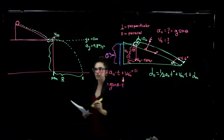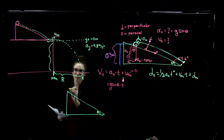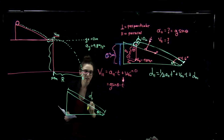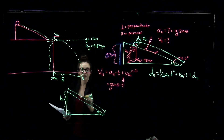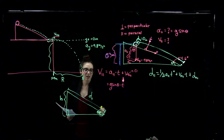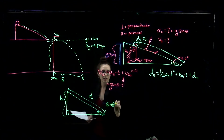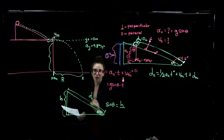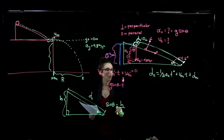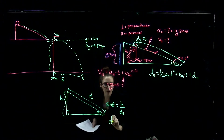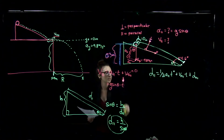Let's redraw the triangle. We have the inclined plane, angle theta at the base, D_parallel as the hypotenuse length, and the vertical height H. Using trigonometry: sine of theta equals the opposite side (height) over the hypotenuse (D_parallel). Rearranging to solve for D_parallel gives D_parallel equals H over sine theta.